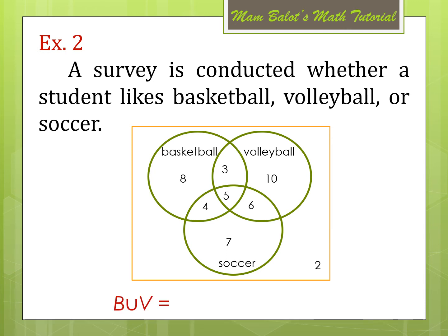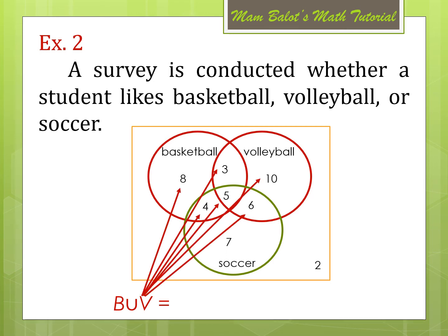If we need to find B union V, we need to add all the students enclosed in the circle of basketball and volleyball, which are colored in red. Adding all the numbers involved in those circles: we have 8, 3, 4, 5, 6, and 10. Summing it all up, that is equal to 36. So, B union V is equal to 36.